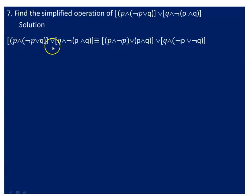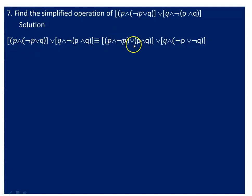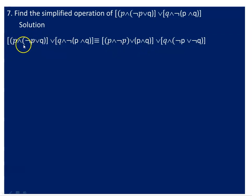We can distribute using the distribution property. Distributing P, we get: negation P or P and Q. So, P and (negation P or Q) becomes P and negation P, or P and Q — applying the distributive property of conjunction over disjunction.